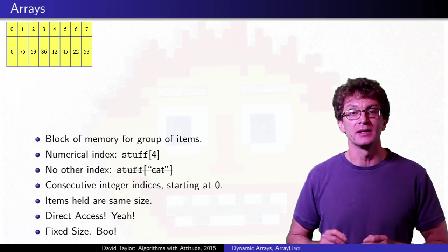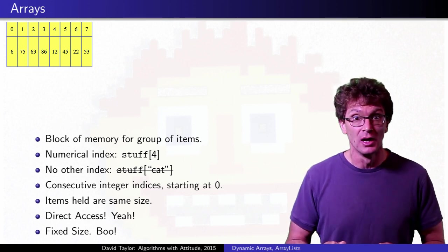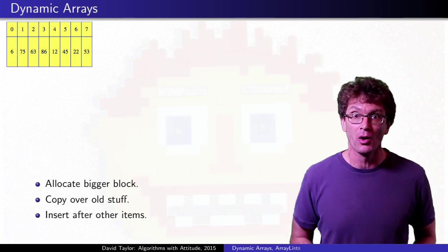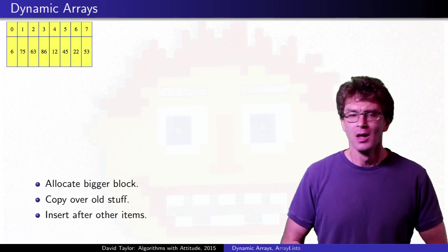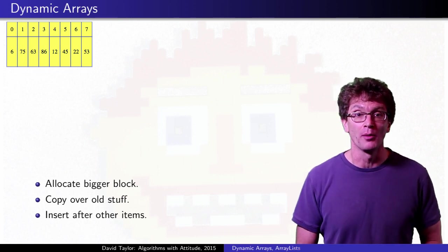The big idea behind a dynamic array is that if you want to add something to an array that is already full, just allocate a bigger array, copy over all the items from the old array, and now you have space for more elements. Freaking genius, right? Now, it's really simple, but you need to do it the right way to get good performance.